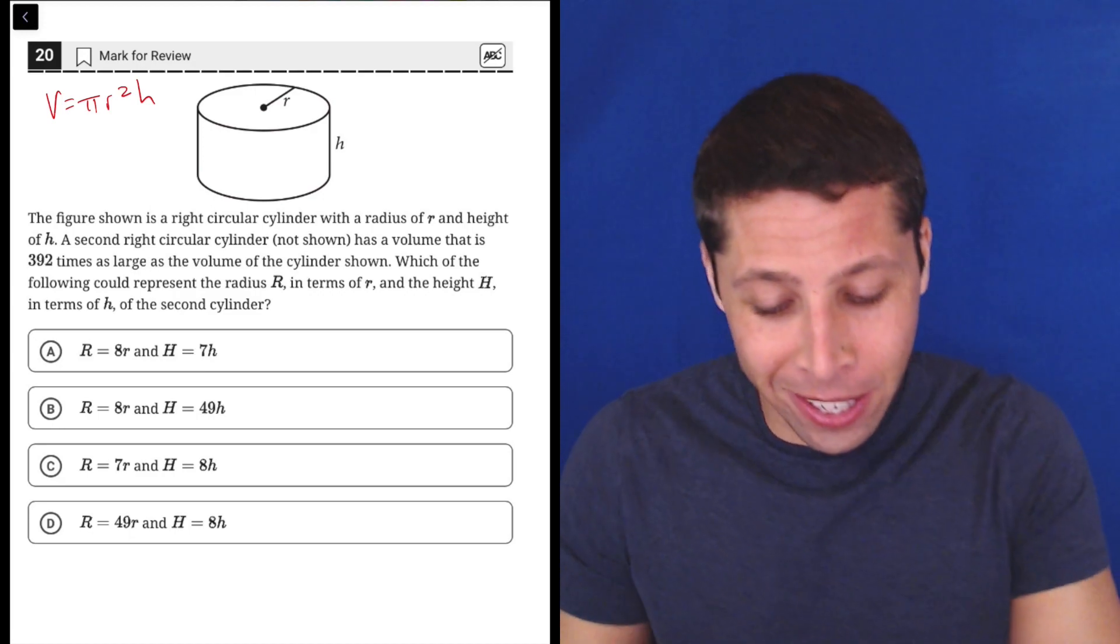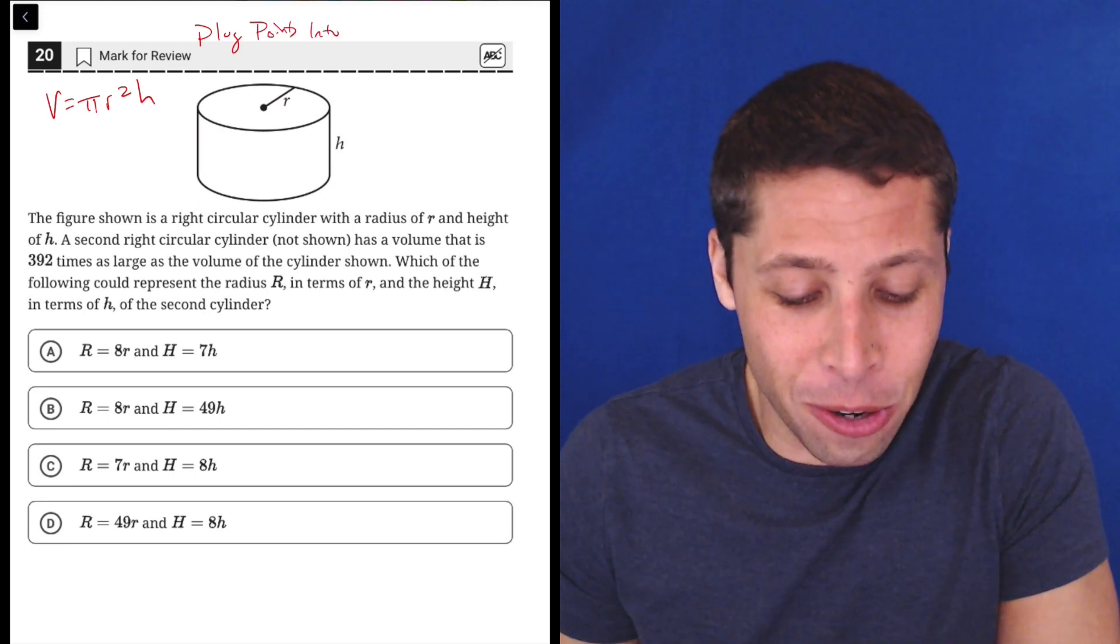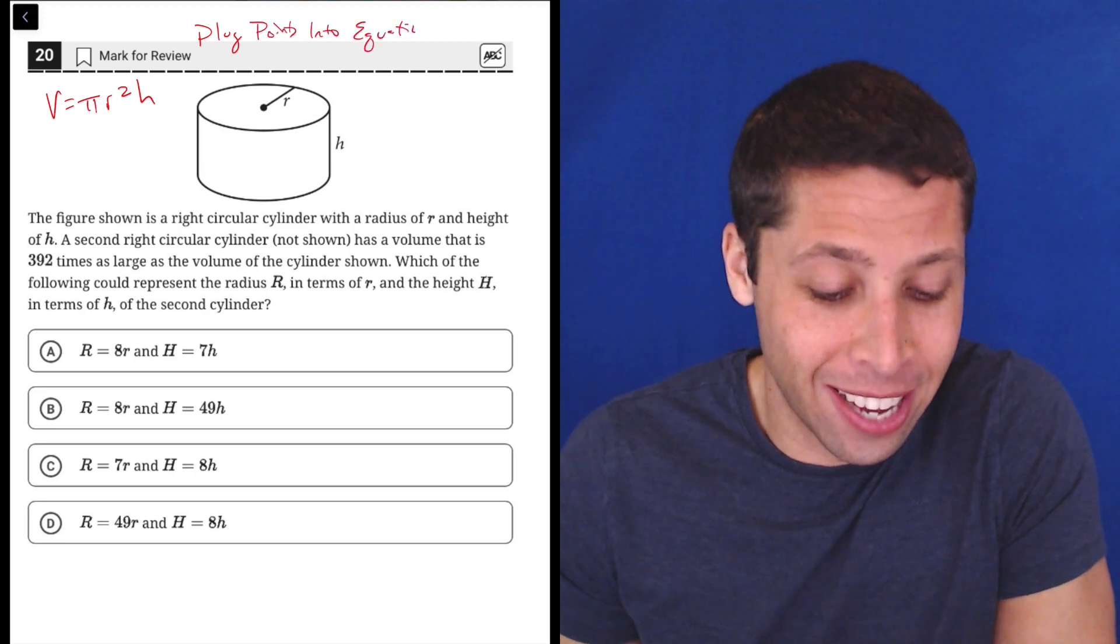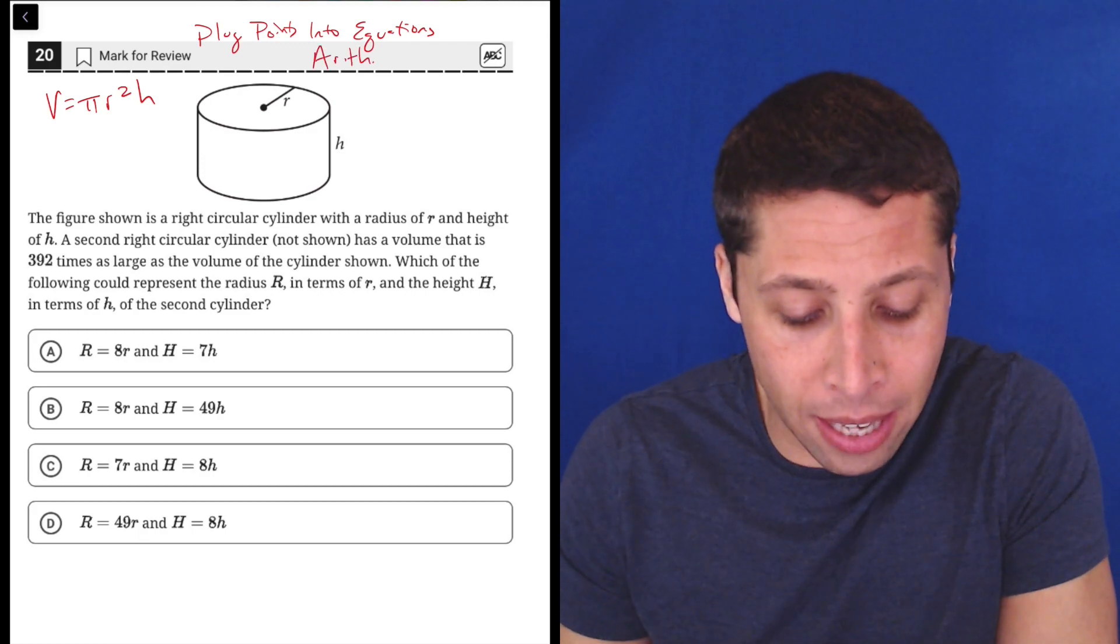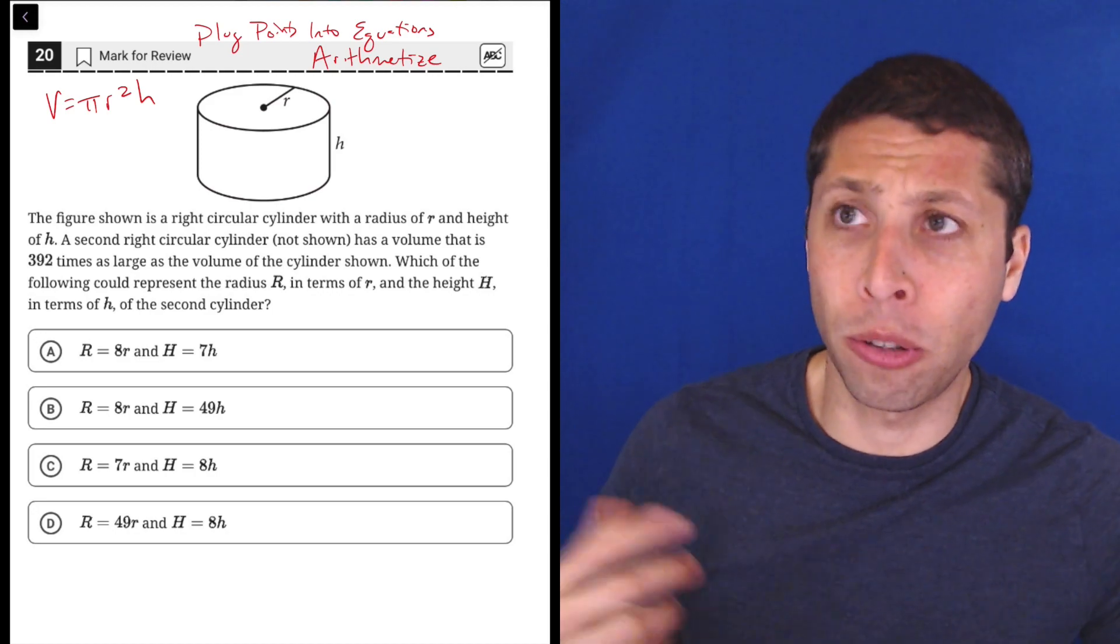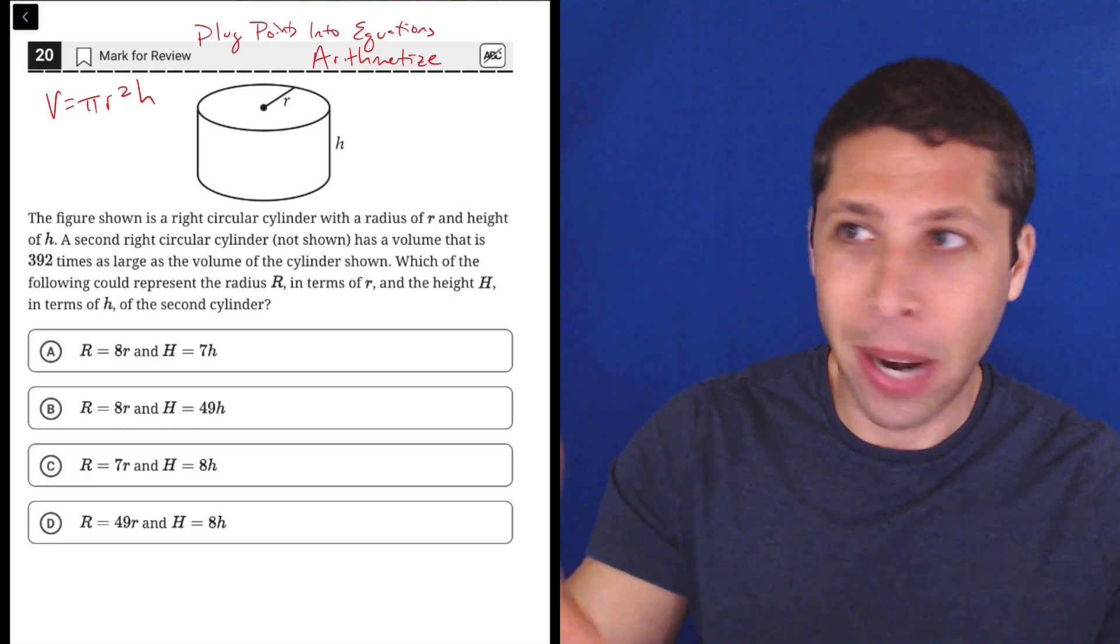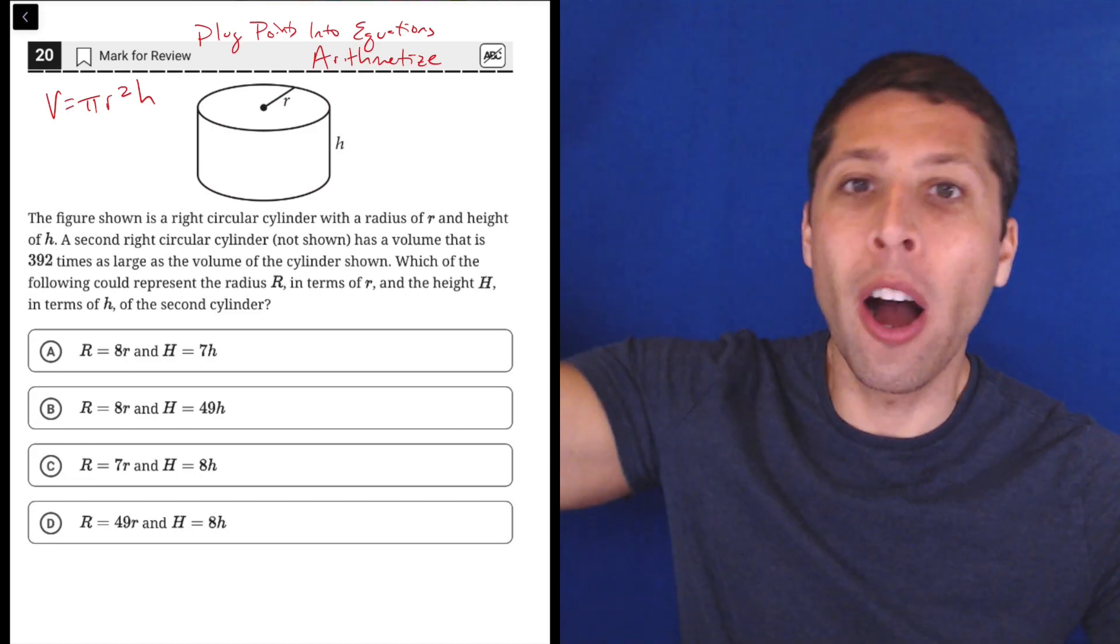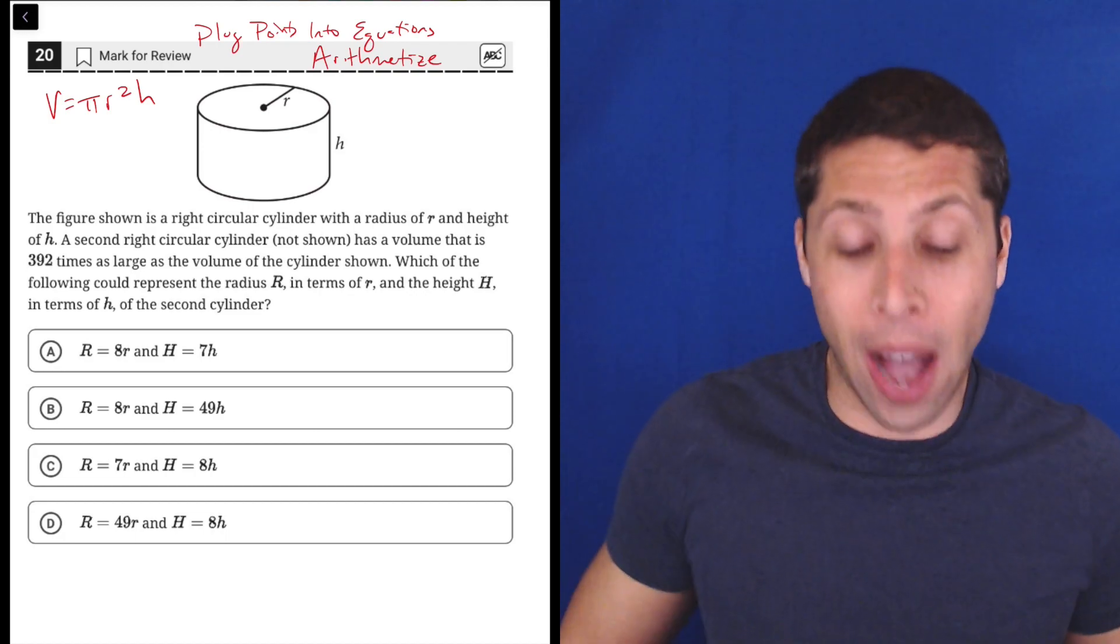But guess what we can do? We can plug points into equations to get some values. Specifically, we're going to use that arithmetize strategy because they tell us that the second cylinder is 392 times larger. I don't know how big the original one is, but I can make it however big I want and then just know that the next one is going to be 392 times bigger. So it'll all work itself out.